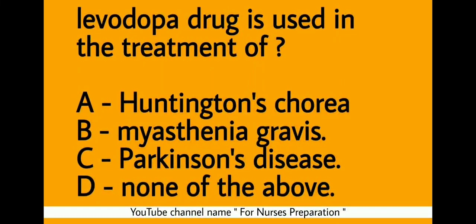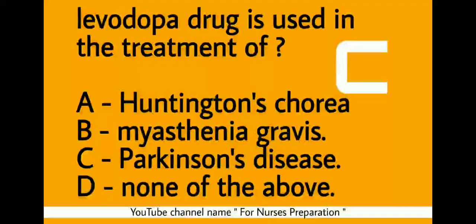Levodopa drug is used in the treatment of — Option A: Huntington's chorea. Option B: Myasthenia gravis. Option C: Parkinson's disease. Option D: None of the above. Correct answer is Option C. Levodopa drug is used in the treatment of Parkinson's disease.